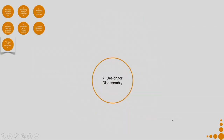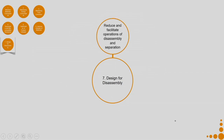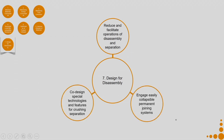Now the final criteria is design for disassembly. Reduce and facilitate operations of disassembly and separation. Engage easily collapsible permanent joining systems. Co-design special technologies and features for crushing separation — you do not design the product thinking only of the product itself, but co-design it with the party who will also handle end of life. You design the product in a manner that makes end of life easy.